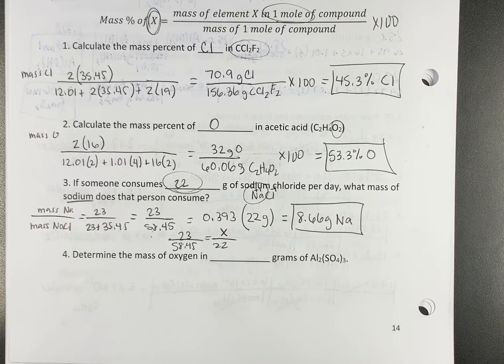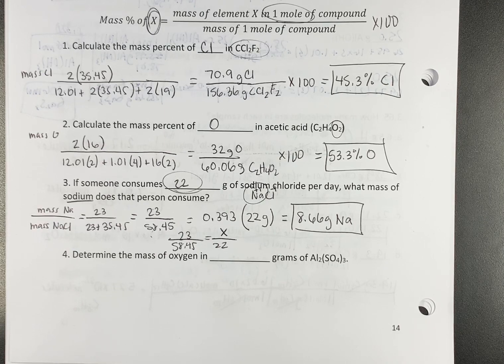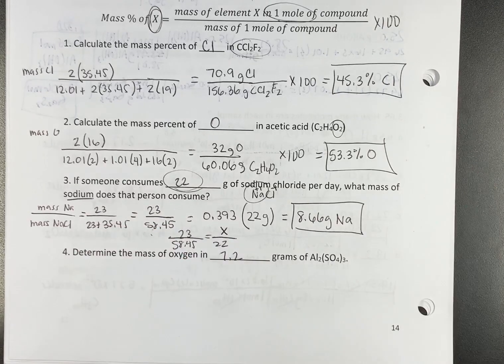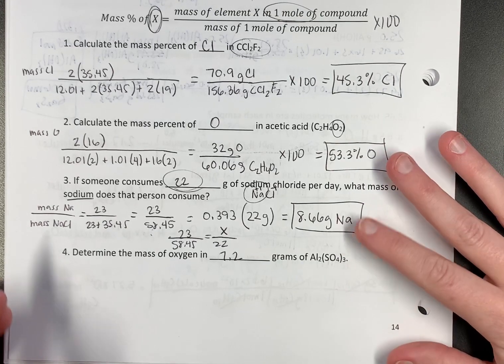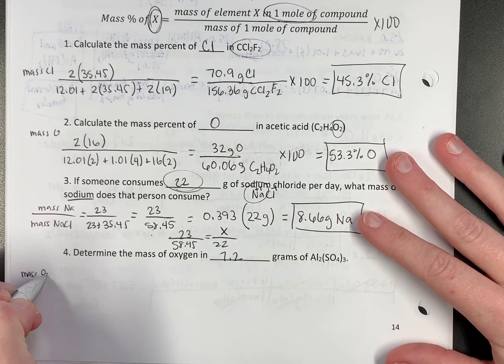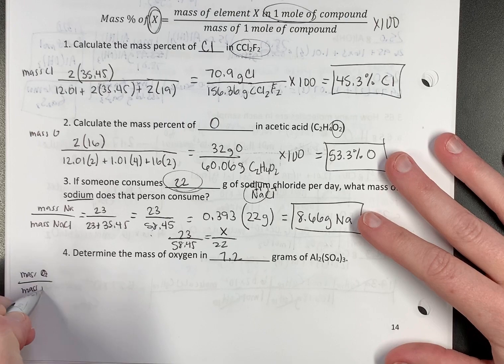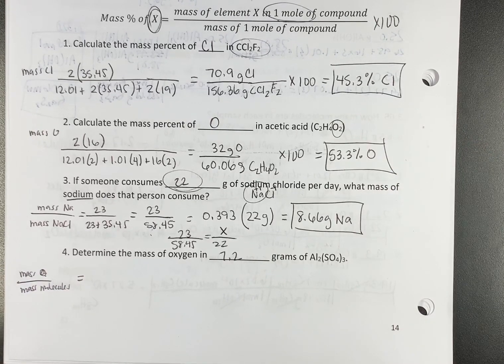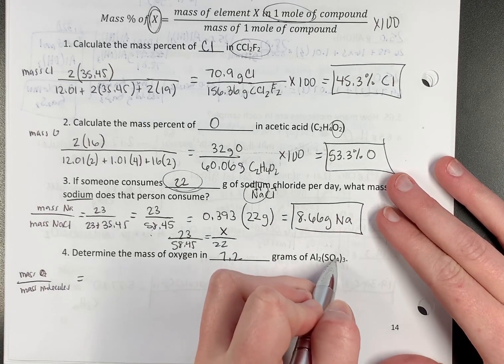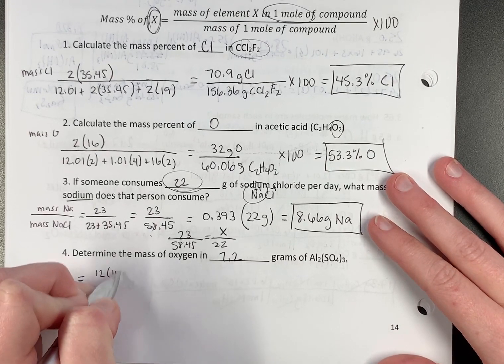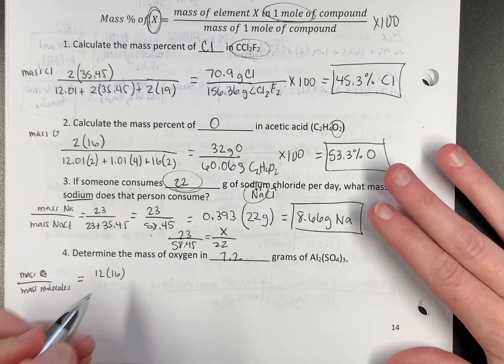Let's take a complicated formula. So we're going to have the mass of oxygen in 7.2 grams of aluminum sulfate. So we're going to work this the same way that we worked this one. Let's figure out our composition first. How much oxygen, what percent of it is in a molecule. So we'll do mass of oxygen over mass of molecule. How many oxygens are in this molecule? 12. 4 times 3 is 12. Oxygen weighs 16.